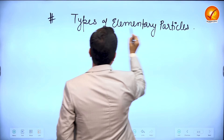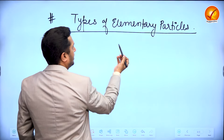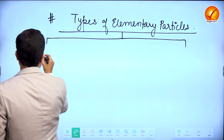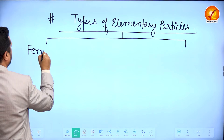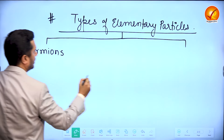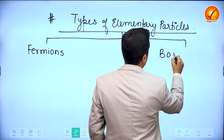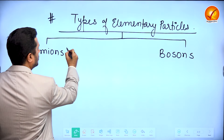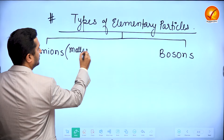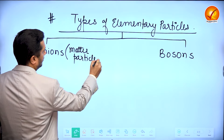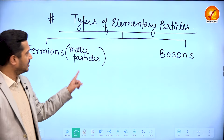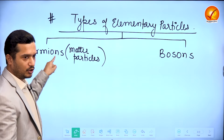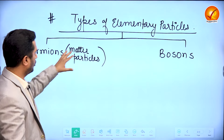So talking about the types of elementary particles: elementary particles can be broadly classified under two types — we have the fermions and the bosons. Fermions are the matter particles, meaning the whole matter in the universe is made up of elementary particles called fermions. All the matter in the universe is made up of fermions.